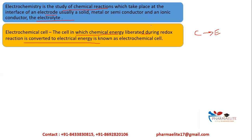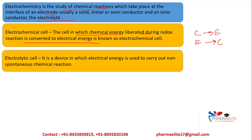There are different types of electrochemical cells in which there is conversion of energy. In one type, energy goes from chemical to electrical. There is also a type called an electrolytic cell, where electrical energy is used to carry out a non-spontaneous chemical reaction — that is, electrical energy is converted to chemical energy.